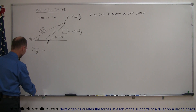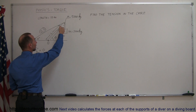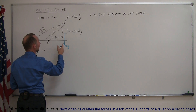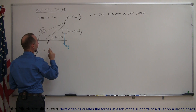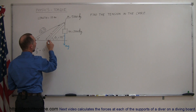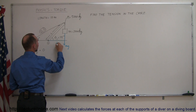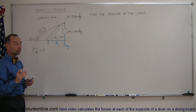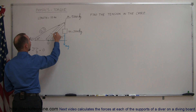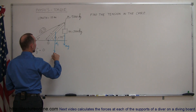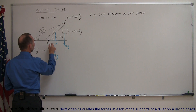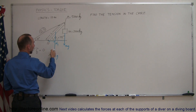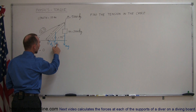Let's identify all the torques. The first one would be the weight of this mass — the force mg pulling down on the end of the beam. We need to find the distance from the pivot point to the line of action of the force; we'll call that d1. The second force will be the weight of the beam, acting at the center of mass at the halfway point. The weight of the beam is big Mg, and the perpendicular distance from the pivot point to the line of action is d2.